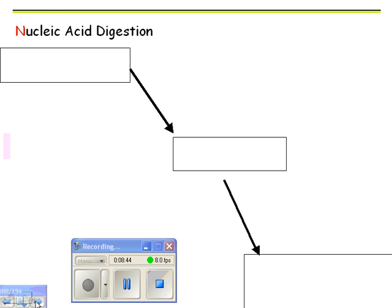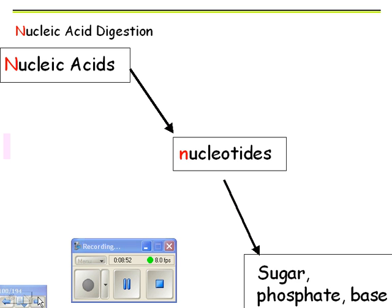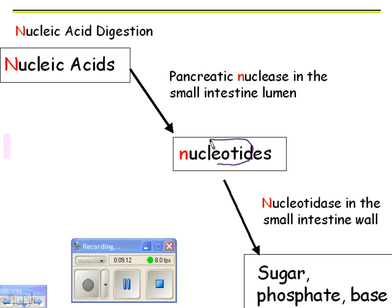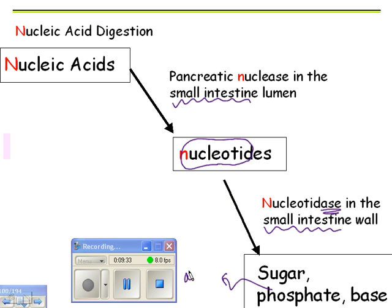Nucleic acid digestion: nucleic acids are broken down to nucleotides, which are broken down to sugars, phosphates, and bases. Nucleic acids are broken down by pancreatic nucleases in the small intestine, and then nucleotidases in the small intestine wall finish the job. To summarize: carb digestion starts in the mouth, protein digestion starts in the stomach, everything else starts and ends in the small intestine, and everything is absorbed out of the small intestine into the blood.